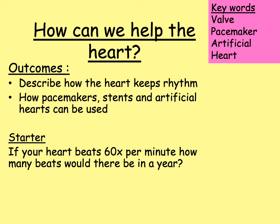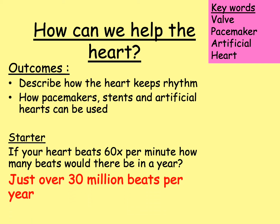As your starter: if your heart beats 60 times per minute, how many beats would there be in a year? Think about what values you need to use and come up with an answer. The answer is just over 30 million beats per year.